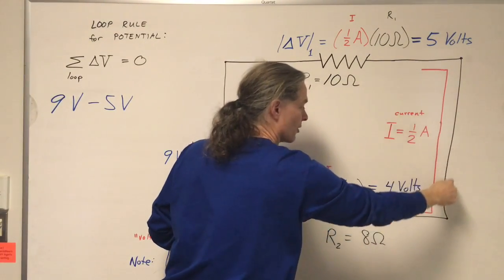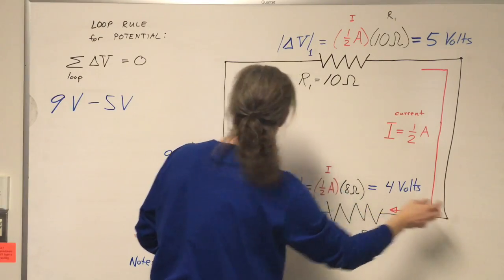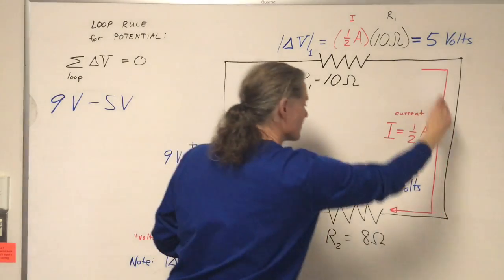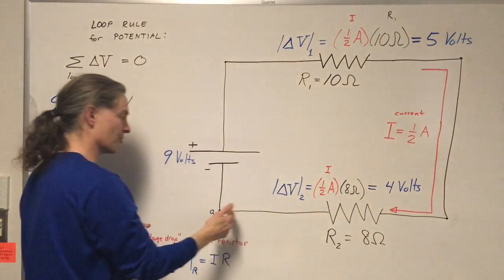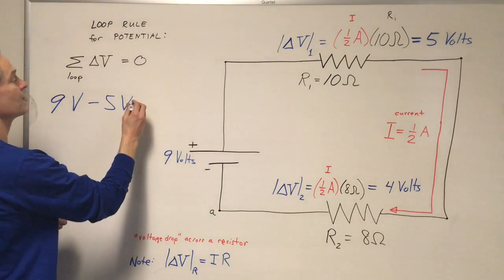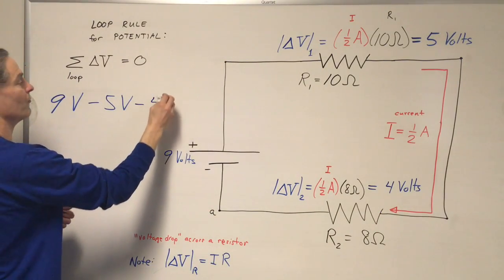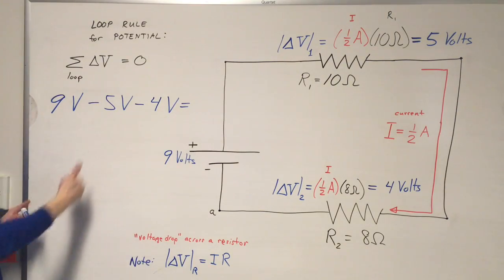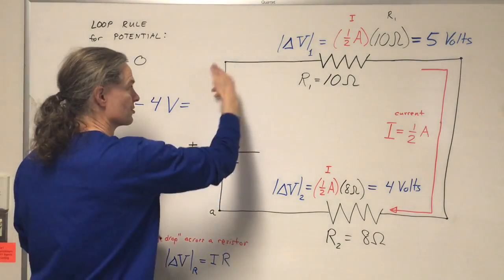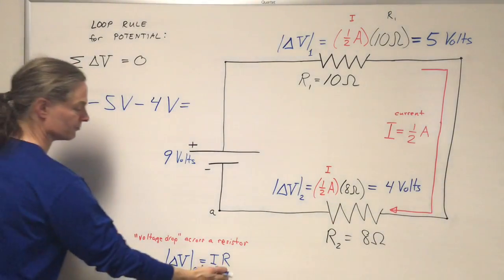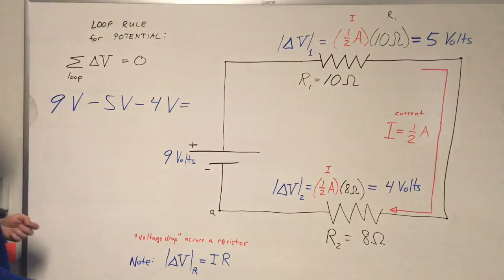There's no voltage drop across these zero resistance wire segments. The remaining voltage drop is across the 8 ohm resistor, a 4 volt drop, so minus 4 volts. Those are all the changes in electric potential, assuming these are zero resistance connecting wires. No resistance means no voltage drop.